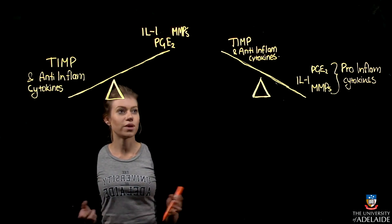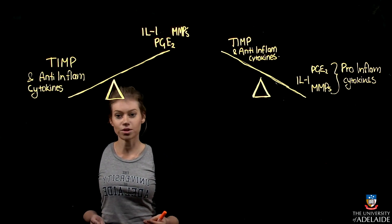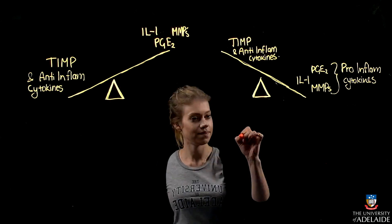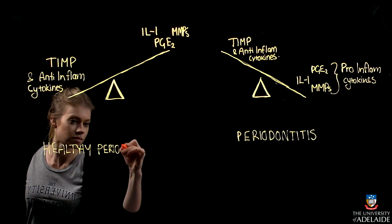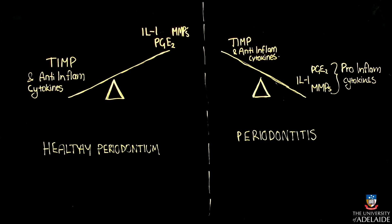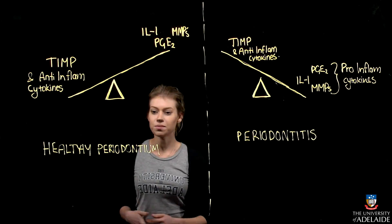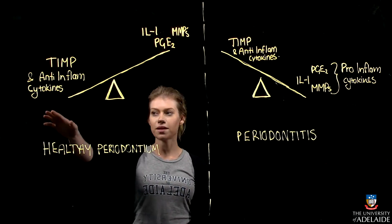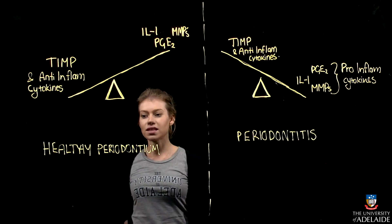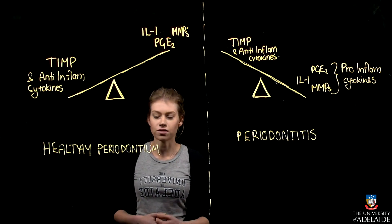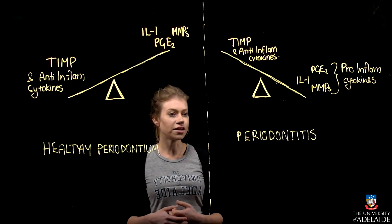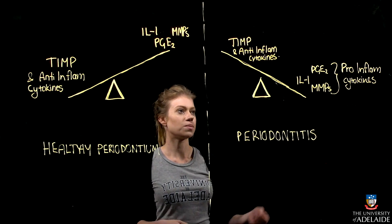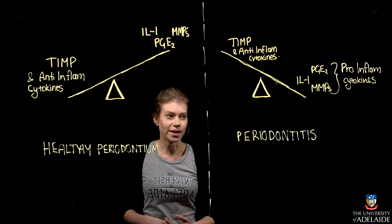This shows the balance of cells in a healthy periodontium versus an unhealthy case such as periodontitis. In a healthy periodontium, there are more Th2 cells present and anti-inflammatory cytokines, creating a balance that leads to healthy tissue expression. In an unhealthy case like periodontitis, there are more pro-inflammatory cytokines such as PGE2, interleukin-1, and MMPs.